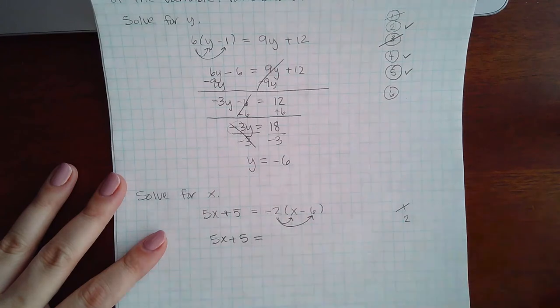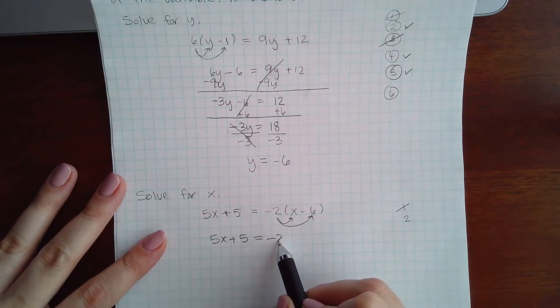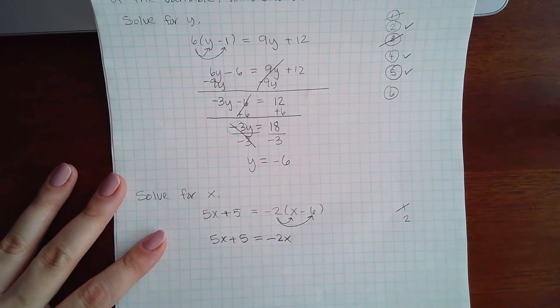So again, negative 2 times x is going to be negative 2x, and then negative 2 times a negative 6 is actually going to turn this into positive 6.